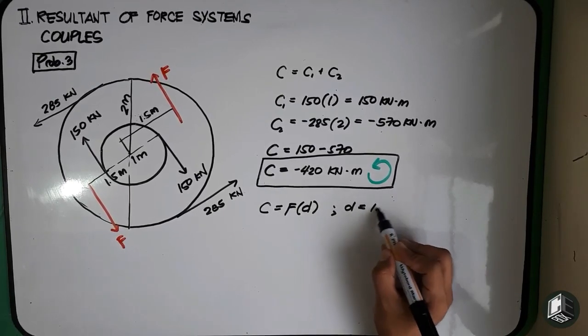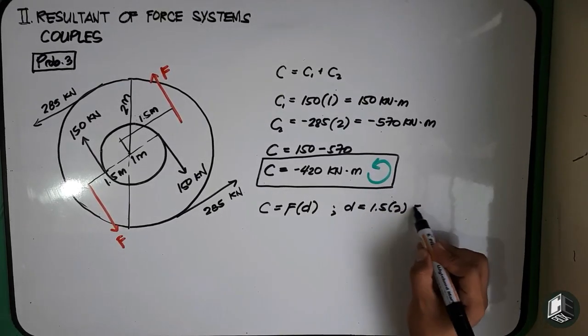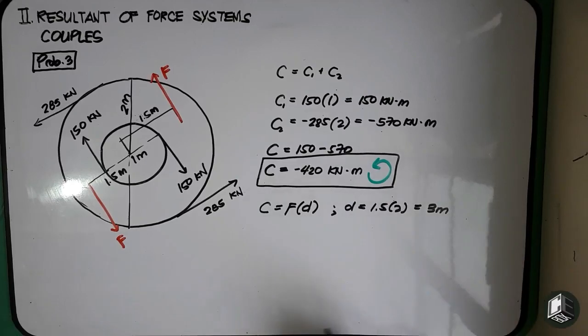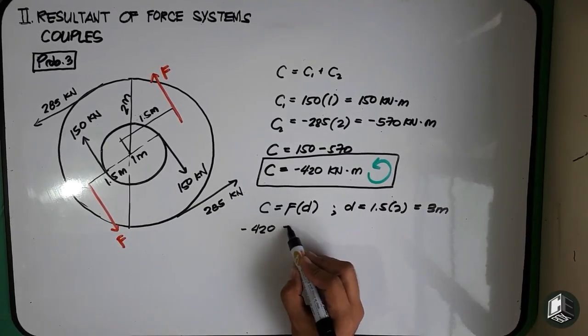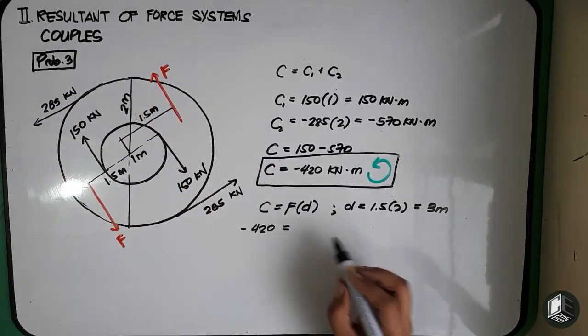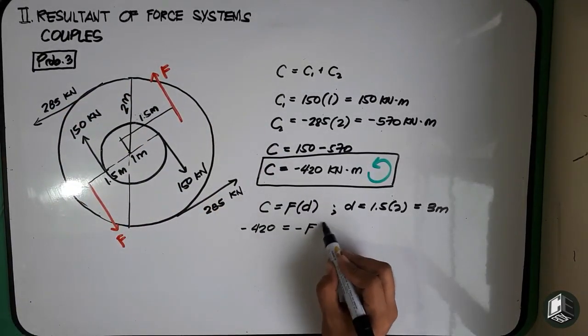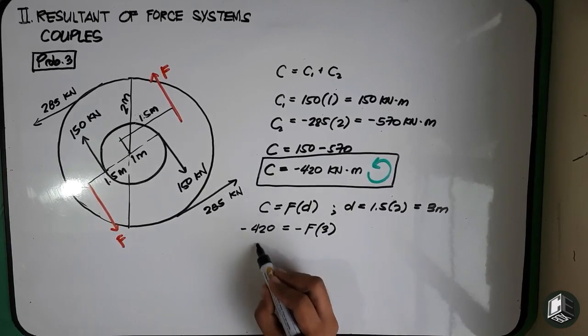where d is equals to 1.5 multiplied by 2 which is equals to 3 meters. So ang C natin is equals to negative 420 is equals to, ang rotation natin is counterclockwise so negative F multiplied by d na 3 meters.